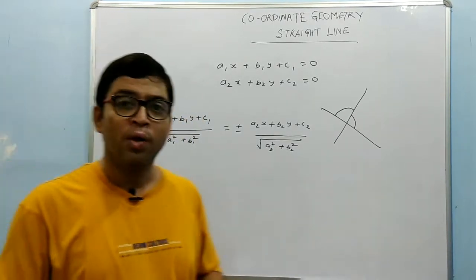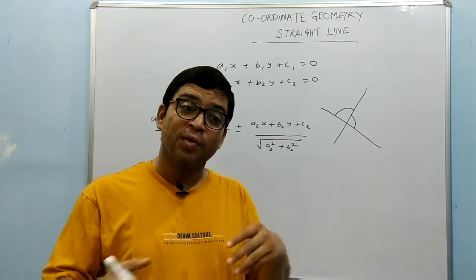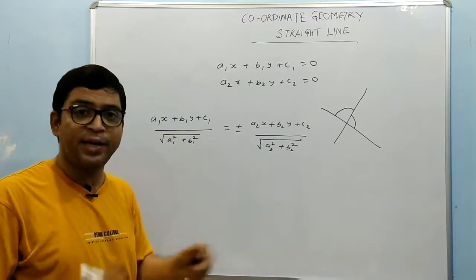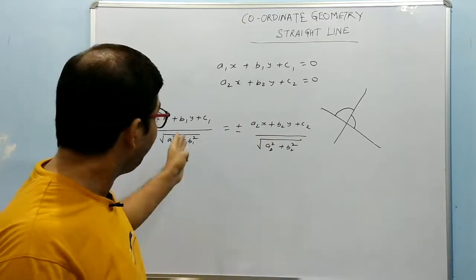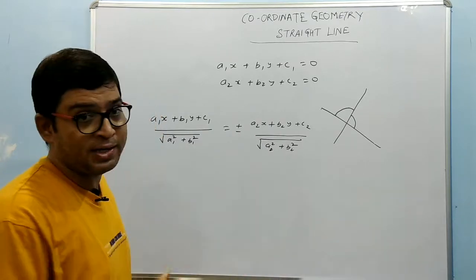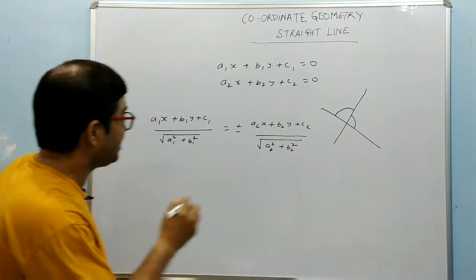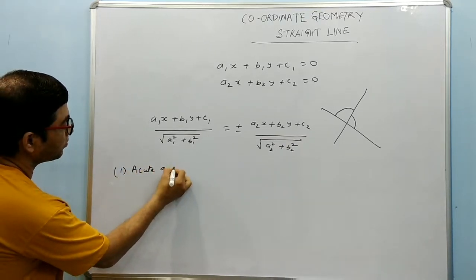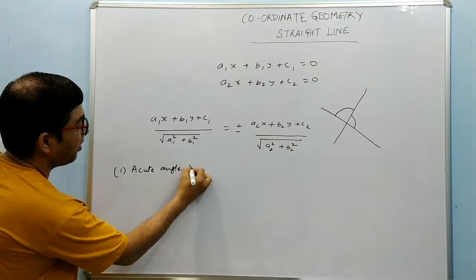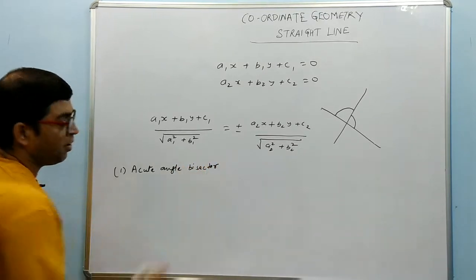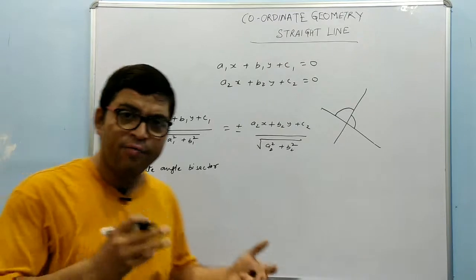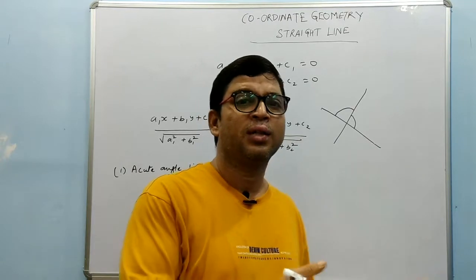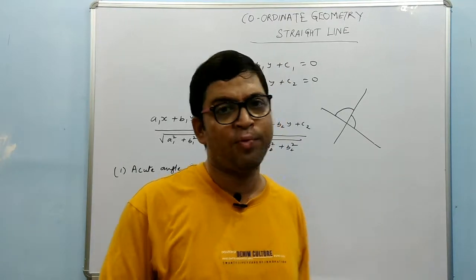We will now see which angle bisector has which particular properties. With the plus-minus sign, if you take the plus sign you get one angle bisector, and if you take the negative sign you get another angle bisector. We will first look at the acute angle bisector. If one angle bisector is the acute angle bisector, then the other angle bisector will be the obtuse angle bisector.